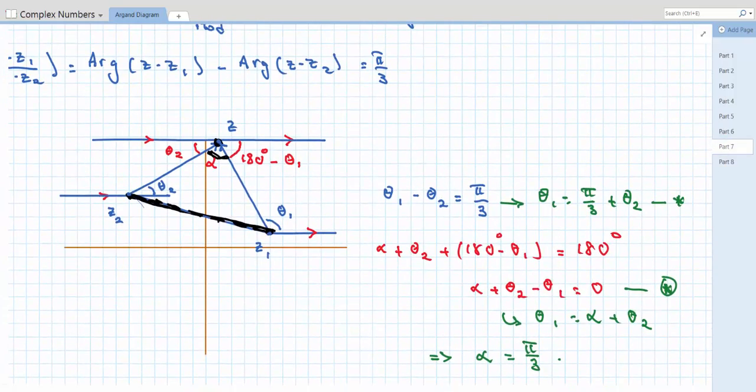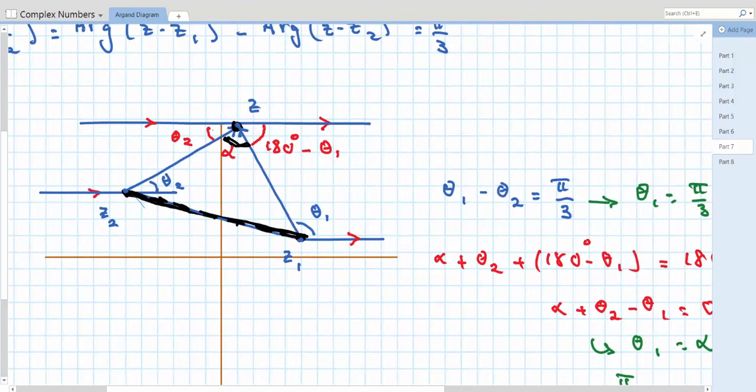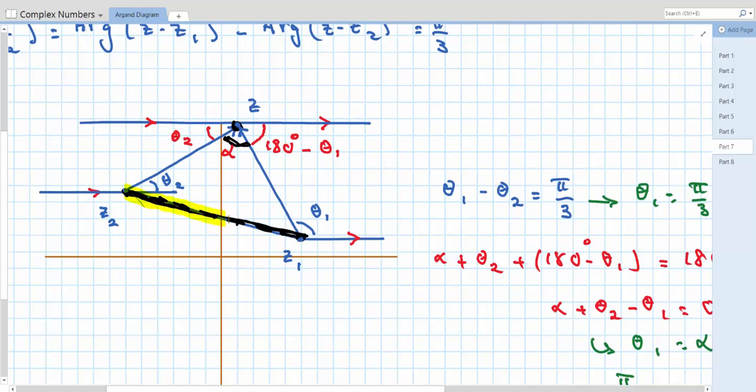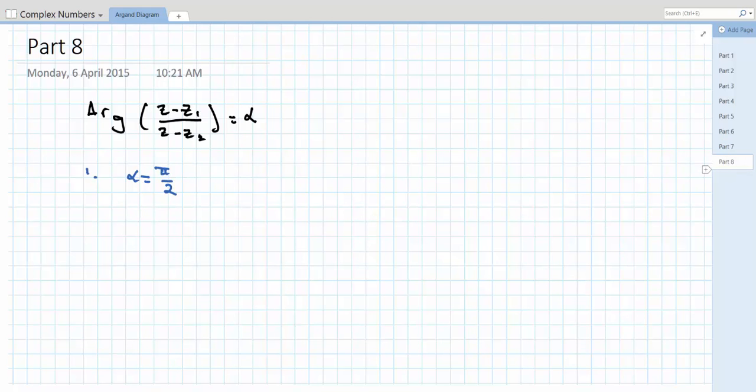what we had was alpha being the angle subtended from the chord. Now we know that if that angle is 90 degrees, then we end up with an angle in a semicircle from our extension 1 circle geometry.